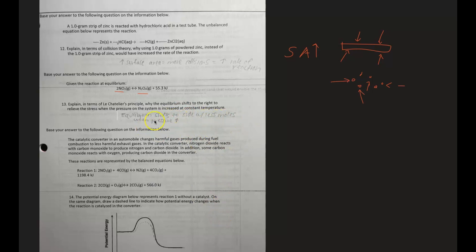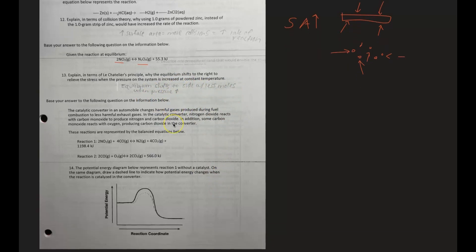Number 14: the potential energy diagram represents reaction one - this one right here. Notice there's a lot of stuff. You definitely want to read everything, but sometimes you can get away with not reading the little passage background to give you